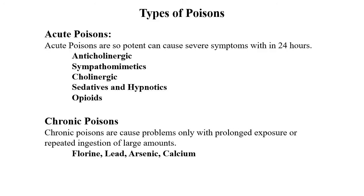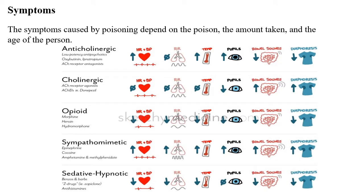Poisons can be divided into two major categories: acute poisoning and chronic poisoning. Acute poisons are so potent they can cause severe symptoms within 24 hours. Examples include overdoses of anticholinergics, sympathomimetics, cholinergics, sedatives, hypnotics, and opioids. Chronic poisons cause problems only with prolonged exposure or repeated ingestion — examples include fluorine, lead, arsenic, and calcium.